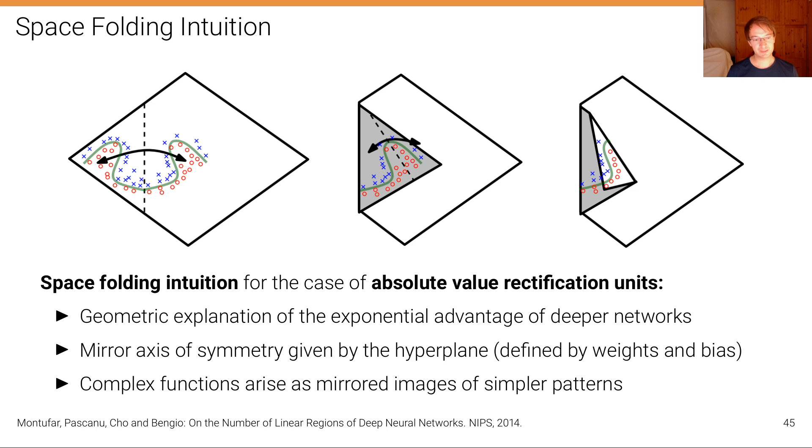So here is some result from the paper of Montúfar et al. on the number of linear regions of deep neural networks. And this is about an intuition - this paper is theoretical but this figure is an intuition of why deeper networks are useful. And this is called a space folding intuition, and it's an intuition for a specific activation function called the absolute value rectification unit, where we have basically just an absolute value as the activation function.